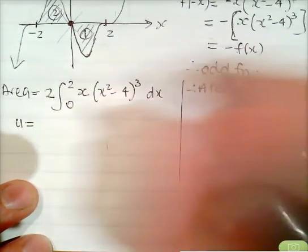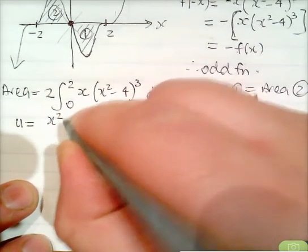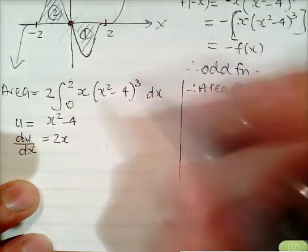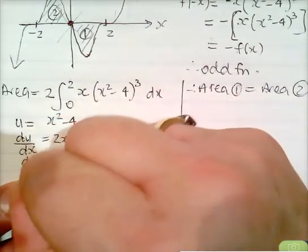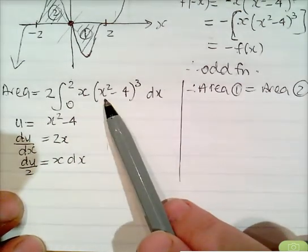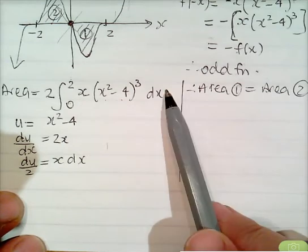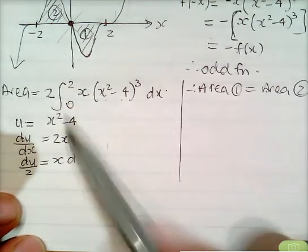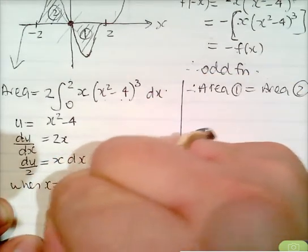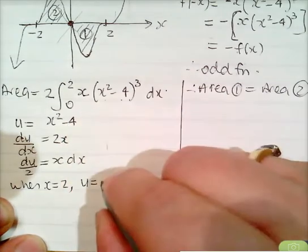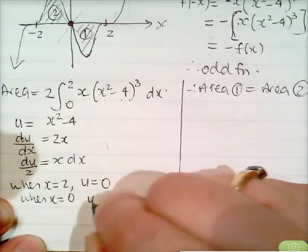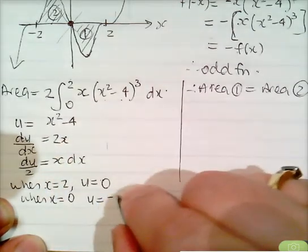Again, let u equal x squared minus 4. Then du/dx equals 2x, so x dx equals du on 2. Changing the limits: when x is 2, u equals 4 minus 4 equals 0. When x is 0, u equals 0 minus 4 equals negative 4.